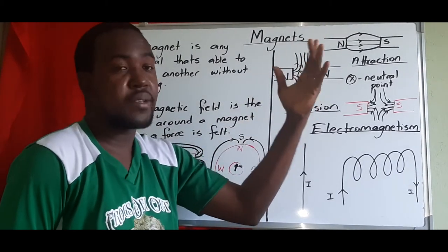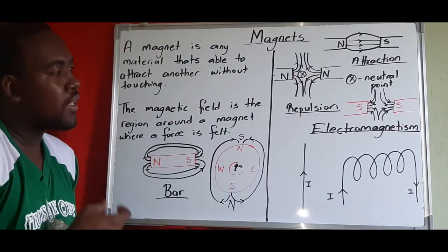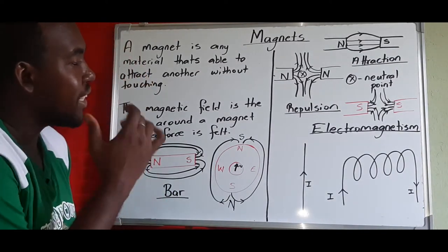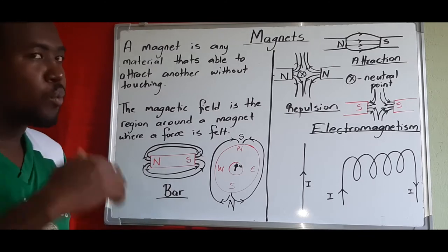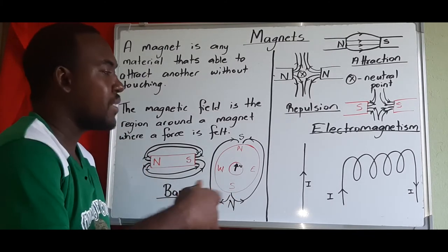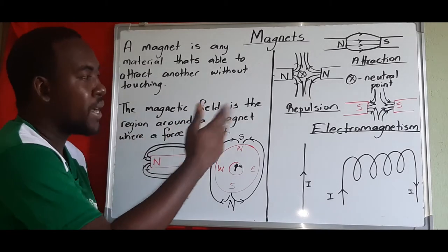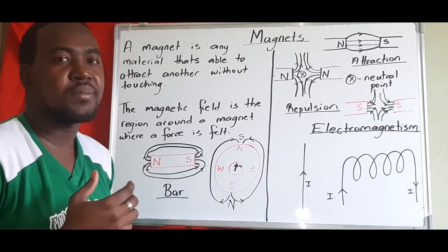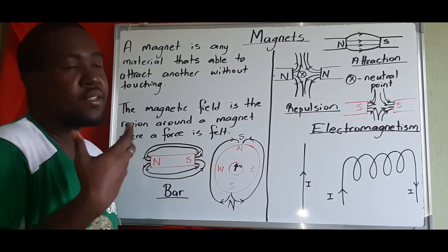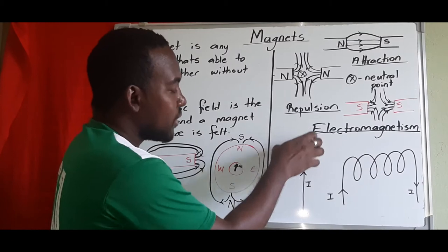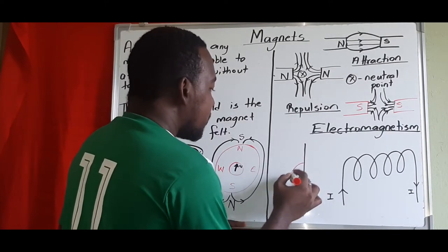Now let's look at electromagnetism — where we have electricity and magnets together. There is a rule that says: once current is moving in a wire, a magnetic field is produced around that wire. That is the foundation of electromagnetism — current flow in a wire induces a magnetic field. The magnetic field around a straight wire is in a circular pattern going around the wire.